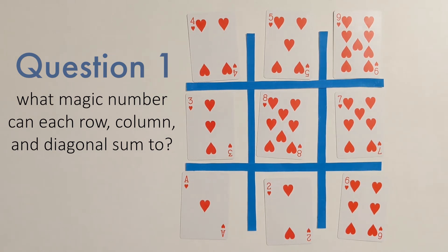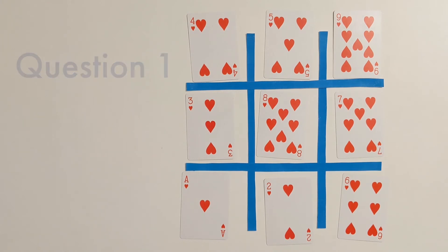Once you've decided on your magic number, or figured it out, you're going to need to move your cards around so that all of your rows, columns, and diagonals add up to your magic number. When you're done with that, we can move on to our next question.